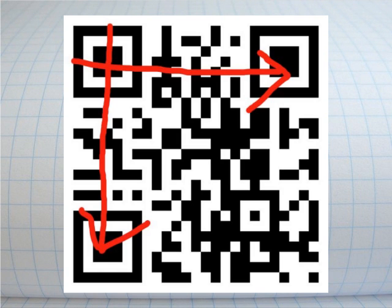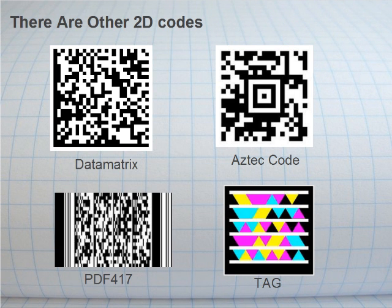2D codes means two dimensions. Unlike barcodes which read left to right, this reads in two directions — left to right and top to bottom. QR is not the only two-dimensional code out there. There are all types of other codes: data matrix, Aztec, PDF — you might have seen this one on the cover of some mail, it's used by the post office.